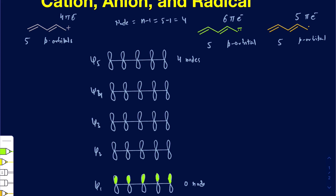For ψ5, the last one, in order to get 4 nodes, none of those should be overlapping constructively with one another. So I have one oriented here, and the next one is out of phase, and after that out of phase again, and the one after that out of phase to the previous one — all doing destructive interference. Counting the nodes wherever lobes are oriented opposite to one another, that gives you nodes 1, 2, 3, and 4. That's how you get four nodes.